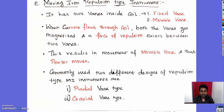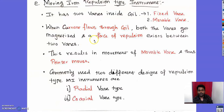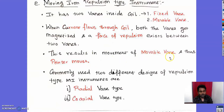The repulsion type moving iron instrument has two vanes: one fixed vane and one movable vane. When current flows through the coil both vanes get magnetized. Since both are magnetized with the same polarity, a repulsion force exists between them, causing the movable vane to move and deflect the pointer. Unlike the attraction type, here the pointer moves due to repulsion force.